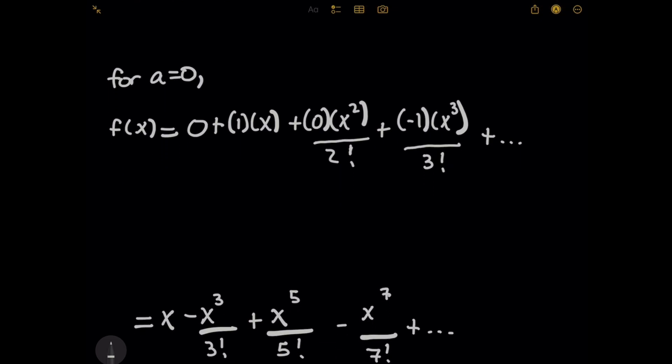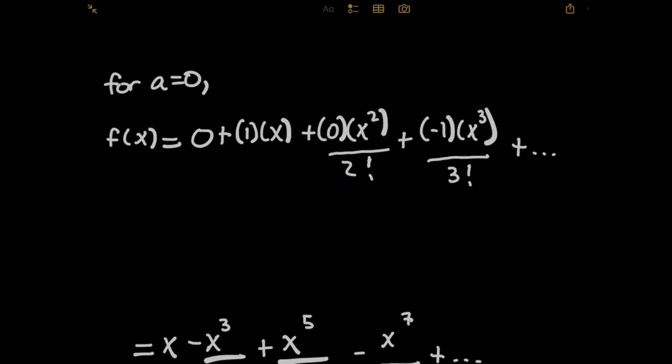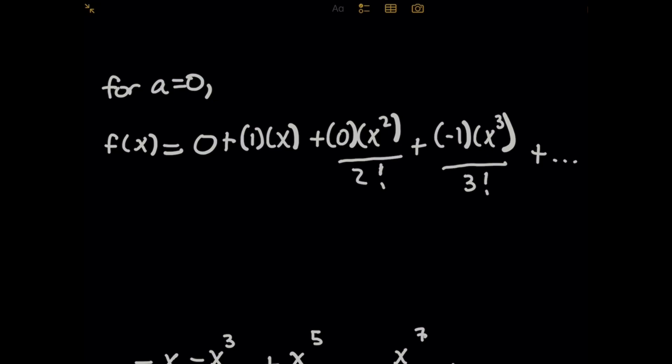And that's going to give me zero as the first term because f of zero was simply zero plus one times x. That came from the first derivative term. And then the next term after that will be zero times x squared all over two factorial. And you can take this out for however many terms you want.